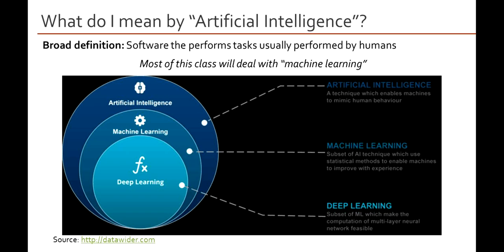The slide also has the term deep learning on it, so let's go through that definition now. Deep learning is a class of machine learning algorithms that use multi-layer neural networks in order to learn from experience. The particularly powerful thing about deep learning models is that they're able to learn very complex patterns from data, in contrast to conventional machine learning — and that's something I hope to illustrate for you hands-on during this course.